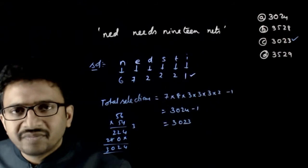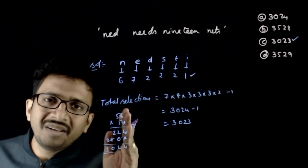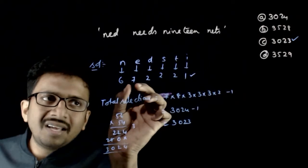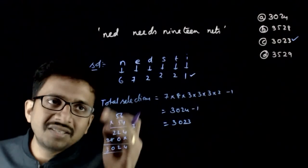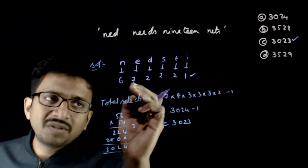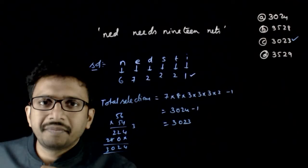So this is the answer. This is a very straightforward formula based question which you need to remember. When you have a certain number of identical objects, total number of selections is first number plus 1 into second number plus 1 into third number plus 1 and so on, minus 1. Thank you.